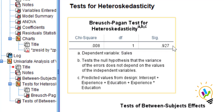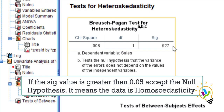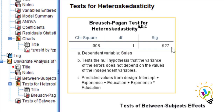In case the significant value is less than 0.05, we reject the null hypothesis, meaning homoscedasticity is not present. Here, the significant value is more than 0.05, so we accept that homoscedasticity exists and the regression assumption is satisfied. If significant value > 0.05 we accept; if less than 0.05 we reject and conclude there is heteroscedasticity. I hope this video is useful for your research. Thank you.